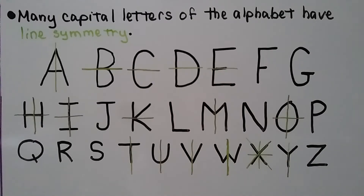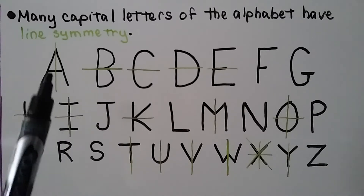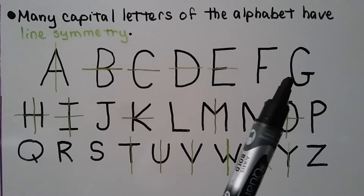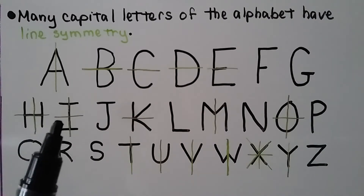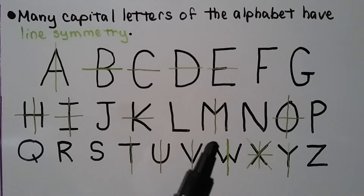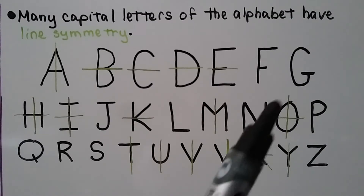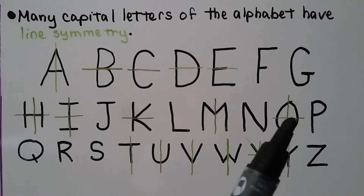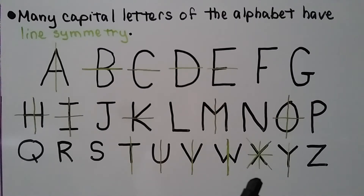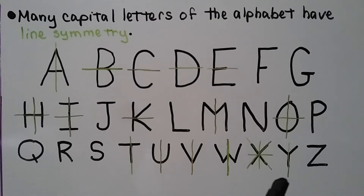Many capital letters of the alphabet have line symmetry. The letter A has one vertical line of symmetry. B, C, D, and E have horizontal line symmetry. F and G don't have symmetry. H has two lines of symmetry, I has two, J has none, K has a horizontal one, L has none. M has only one vertical line. N has none. O, being an oval, has a vertical and a horizontal. P, Q, R, and S do not have line symmetry. T, U, V, and W each have one vertical line, and X has several — two diagonal, a vertical, and a horizontal. Y has one and Z has none.